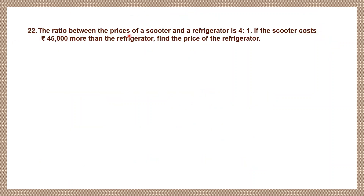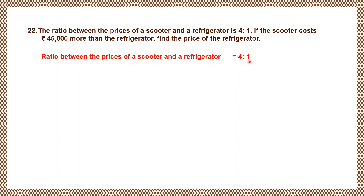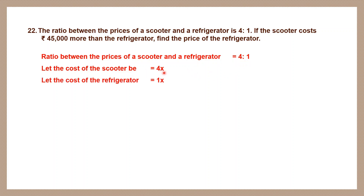Question 22. The ratio between the prices of a scooter and a refrigerator is 4 is to 1. If the scooter costs 45,000 rupees more than the refrigerator, find the price of the refrigerator. Let the cost of the scooter be 4x and the cost of the refrigerator be 1x. The difference is 45,000 rupees.